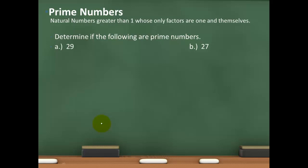I have two examples: 29 and 27. I want to determine if these numbers are prime. For 29, all I have to do is find one number besides 1 and 29 that goes evenly into 29. I can't actually find that number, so 29 is prime — its only factors are 1 and 29.